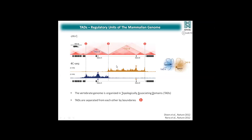Below the Hi-C profile, you see 4C-seq profiles that nicely correspond to this TAD structure — here for gene A, and here for gene B and gene A. On the right side, I depict a model I'll use throughout the talk: in this TAD structure, all sequences within TAD A are in close proximity, and between TADs there are rarely any interactions. With this knowledge, we can easily assign an enhancer to its target gene — it's most probably interacting frequently with gene A and unlikely to interact with gene B across the TAD boundary.